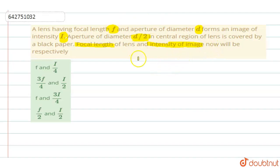With that aperture, light is refracted and you get an image of intensity I. Now if the aperture is decreased, that is if it is made half of its diameter, then the central region of the lens is covered by a black paper.